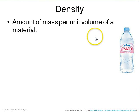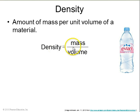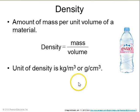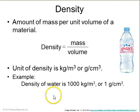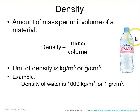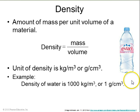A property of any material is density, which is the mass of any part of it divided by the volume of that part. The units can be kilograms per meter cubed or grams per centimeter cubed. For example, water has a density of 1,000 kilograms per meter cubed, which converts to one gram per centimeter cubed. So a liter of water — this bottle of Evian — would have a mass of one kilogram.